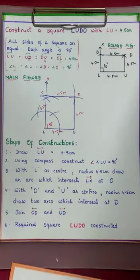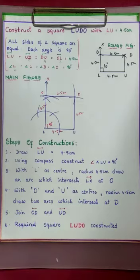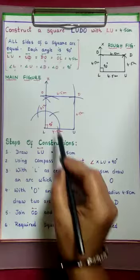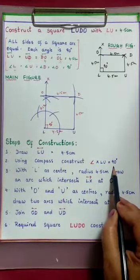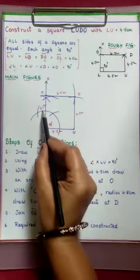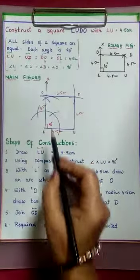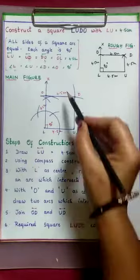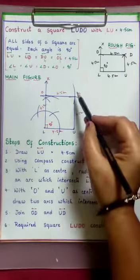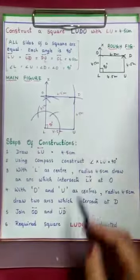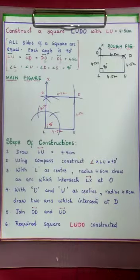Now see the steps of construction. If you want to check, using ruler and protractor you can verify your figure. Draw LU = 4.5 cm. Using compass, construct angle XLU = 90 degrees. With L as center, radius 4.5 cm, draw an arc which intersects LX ray at O. With O and U as centers, taking the same radius, draw two arcs which intersect at D. Join OD and UD. The required square LUDO is constructed.